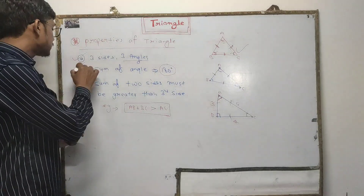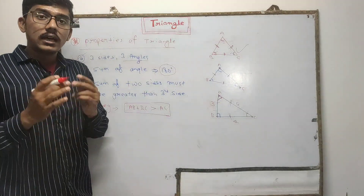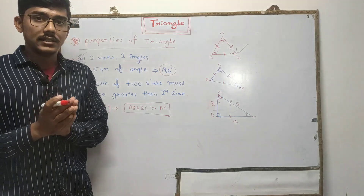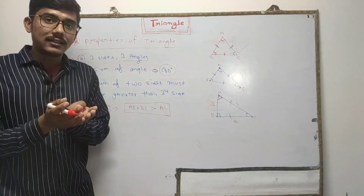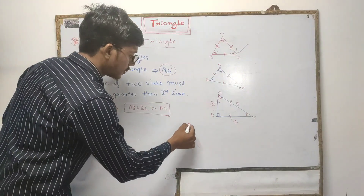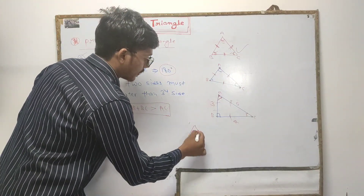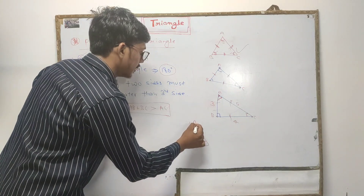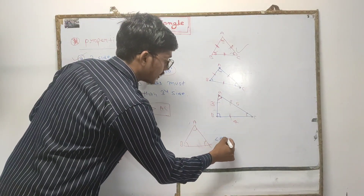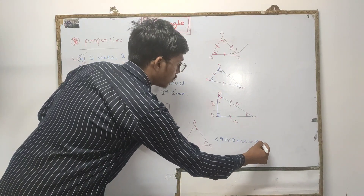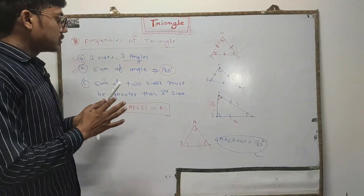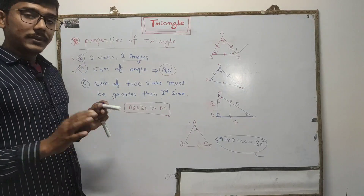The second property: in a triangle, the sum of all its angles should be equal to 180 degrees. Suppose I have a triangle with angle A, angle B, and angle C. If I sum all these angles — angle A plus angle B plus angle C — then it should equal 180 degrees. That is a property of a triangle.